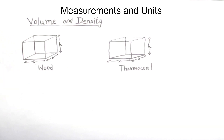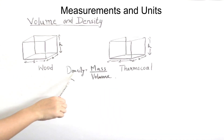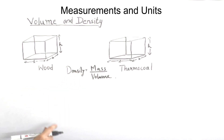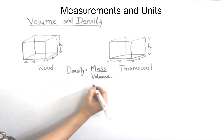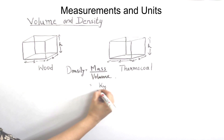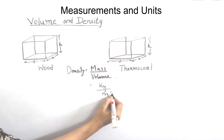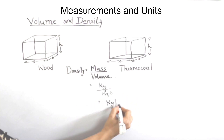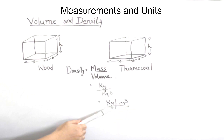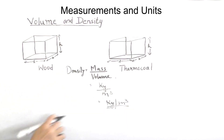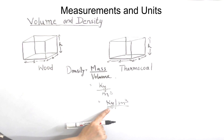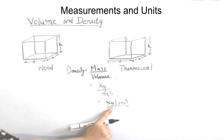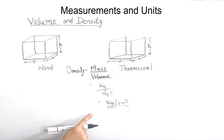Mathematically, density is expressed as mass divided by volume. Density is equal to mass by volume. The unit of mass is kilogram and the unit of volume is meter cube, so the unit of density is kilogram per meter cube. Density is a derived quantity.